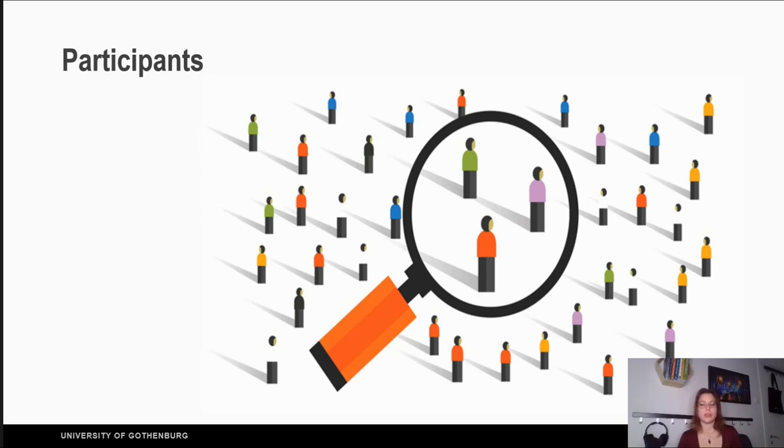Most commonly known methods is convenience sampling, where you grab the first people that you can reach, or the snowball sampling. That is where you know one person that suits your target group and you ask this person if he or she knows other people with similar characteristics. This is called snowball sampling because it starts like a snowball - you find one and this one spreads the word to other people.